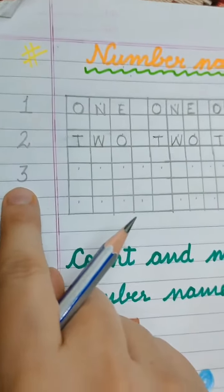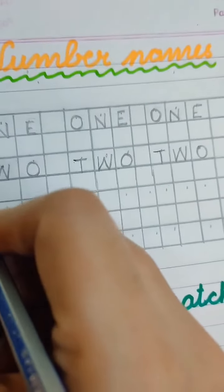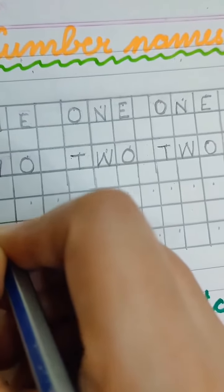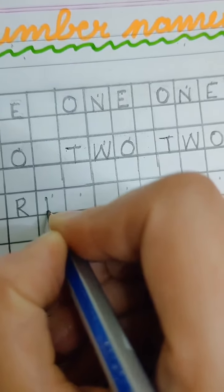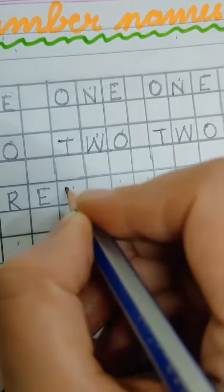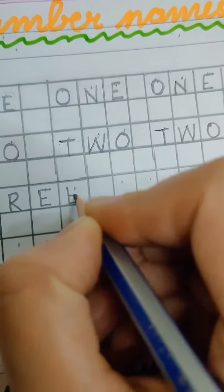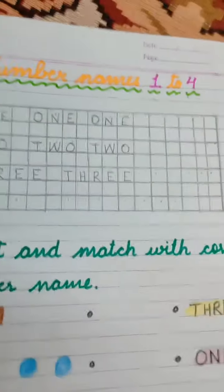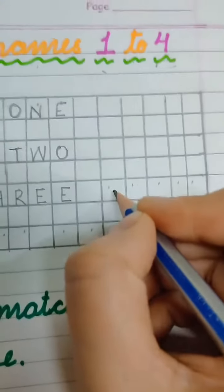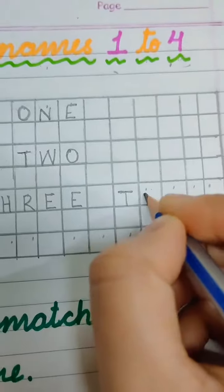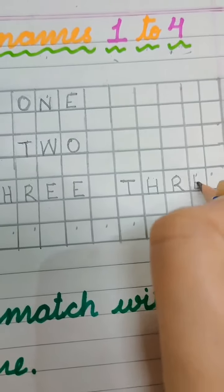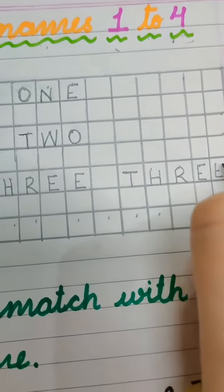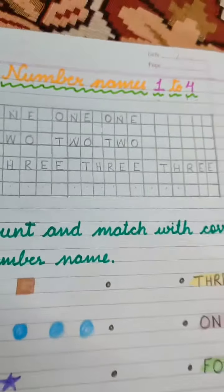Now come to the next — 3. What is the spelling of 3? T-H-R-E-E, 3. One more time — T-H-R-E-E. It becomes the spelling of 3. I have written it 3 times. Now come to the last one — 4.